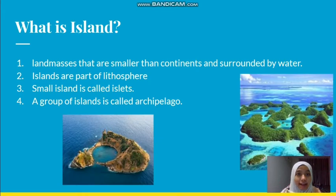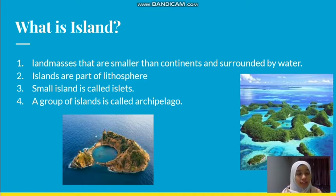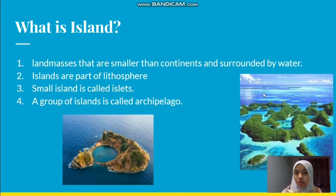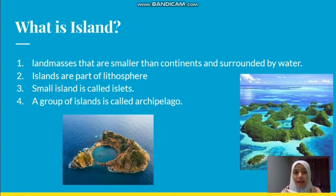What is an island? An island is a land mass that is smaller than a continent and surrounded by water. An island is also part of the lithosphere since it is a land area on the earth. A small island we call an islet. A group of islands we call an archipelago. Indonesia is an example of an archipelago, where it is surrounded by a lot of islands.